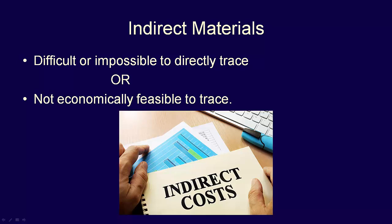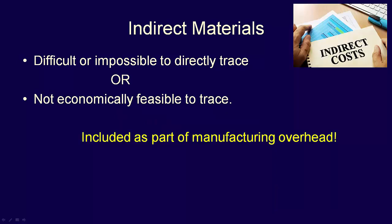Sometimes it's not feasible to trace the material to the product because they're too small or their cost is too low — for instance, the tape we use to seal the box that we put the finished cake in. It's definitely part of the cost of making the product, but the cost is too small to bother tracing directly. Companies account for indirect materials as part of manufacturing overhead.